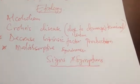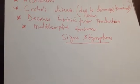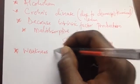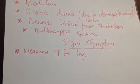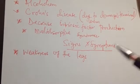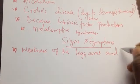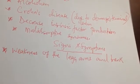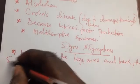Signs and symptoms: since the lateral corticospinal tract is affected, the patient will have weakness of the legs, arms, and trunk. The lateral corticospinal tract carries motor function to the lower and upper limbs. Note that this weakness presents as spastic paralysis.